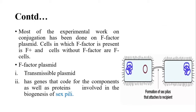Experimentally, conjugation has been studied with the transfer of the F-plasmid. The cells which contain the F-plasmid are called F+ cells, and the cells which lack the F-plasmid are called F- cells.